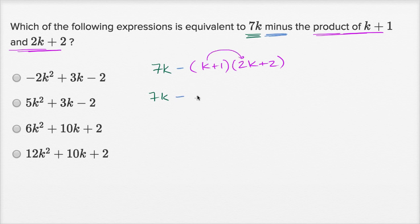You're going to have k times 2k, which is 2k squared, k times 2, which is going to be plus 2k, then 1 times 2k, which is going to give us another 2k, and then 1 times 2, which is going to give us plus 2. And we want to be careful. We want to put a parentheses out front because we're going to subtract all of this stuff right over here.